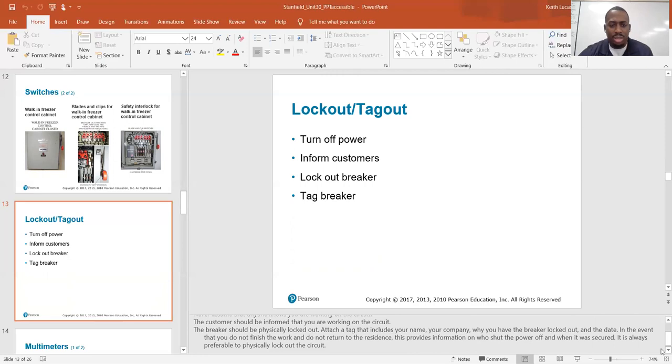The breaker should be physically locked out. Attach a tag that includes your name, your company, why you have the breaker locked out, and the date. In the event that you do not finish the work and do not return to the residence, this provides information on who shut the power off and when it was secured. It is always preferable to physically lock out the circuit.